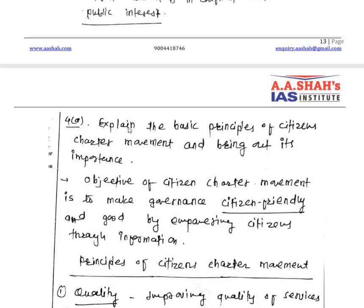Through this citizen charter, citizens get to know what they can expect from this particular office and what services they are going to be provided. The objective of the citizen charter movement is governance ko citizen friendly banana — to make governance citizen friendly and good by empowering citizens through information.